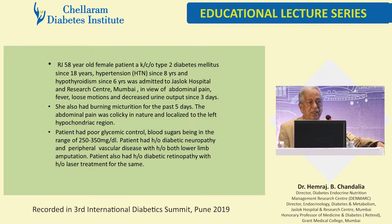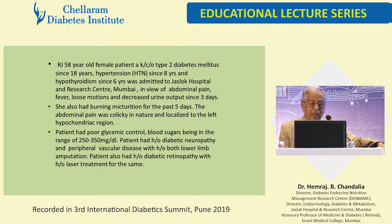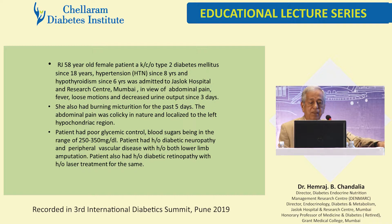I must tell you that the left hypochondriac region is also the anterior renal angle — we all think of the posterior renal angle, but think of the anterior renal angle. The patient had poor glycemic control, blood sugars in the range of 250 to 350 all the time. She had a history of diabetic neuropathy and bad peripheral vascular disease requiring bilateral limb amputation.